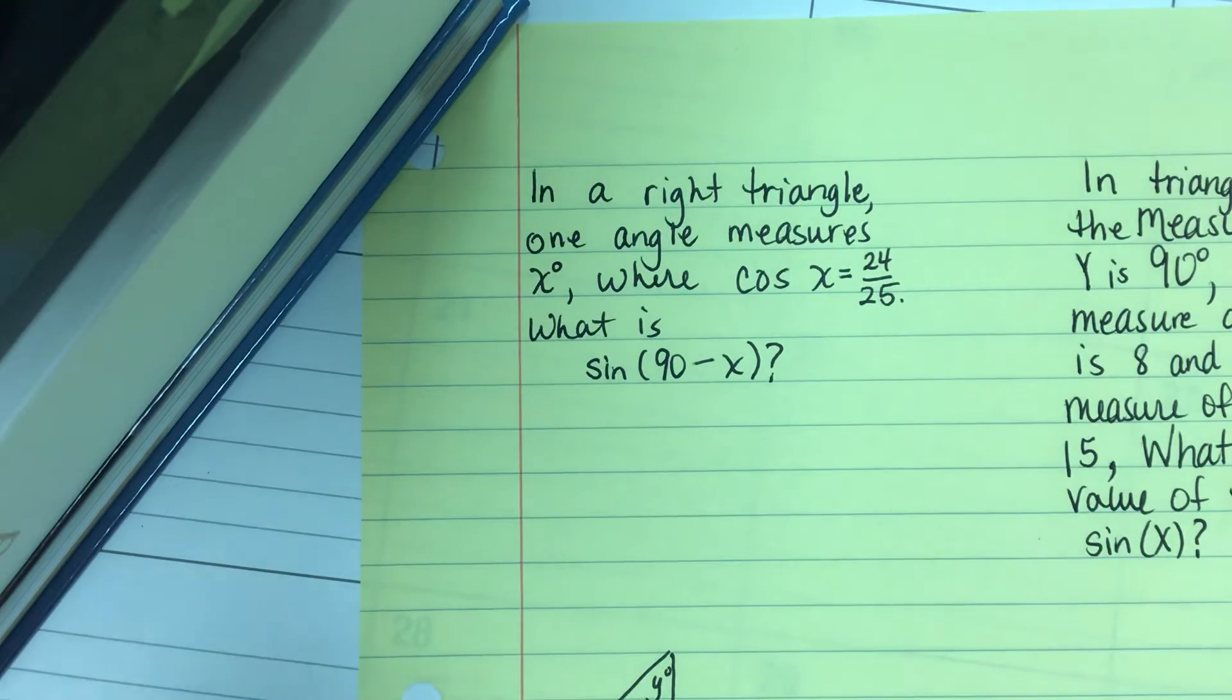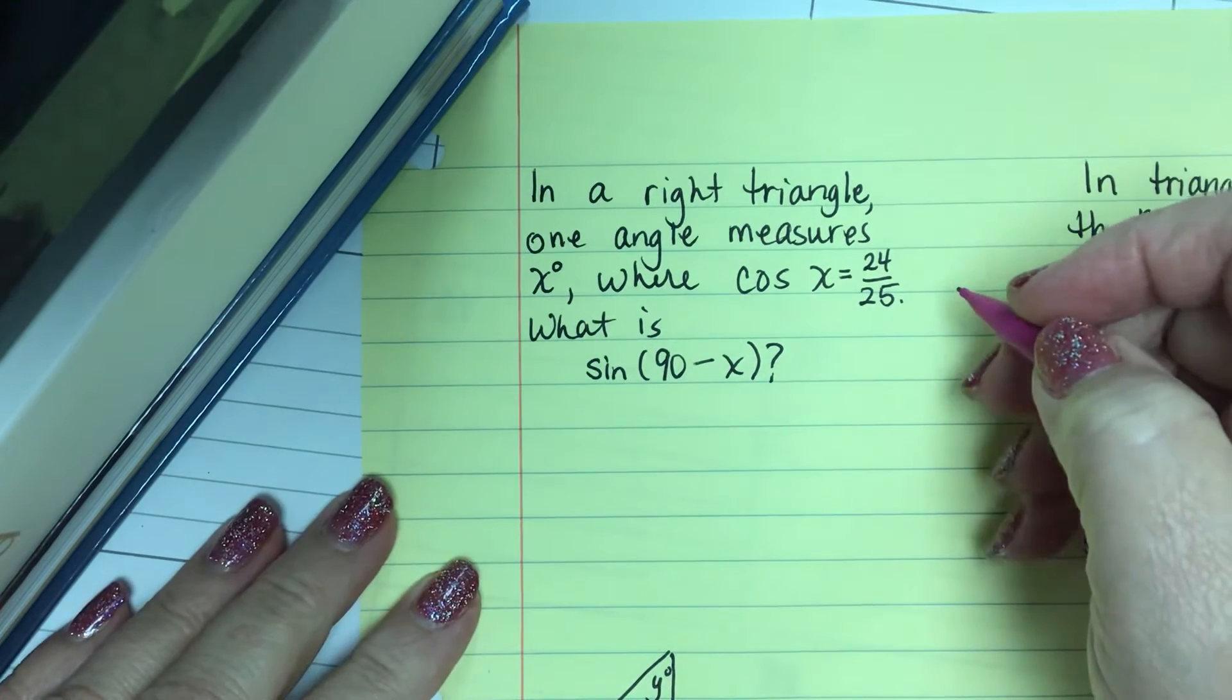Here in the first one it says in a right triangle one angle measures x degrees where the cosine of x equals 24 over 25. What is the sine of 90 minus x?